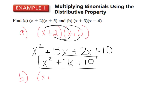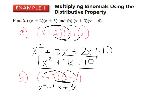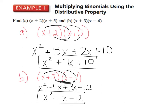Part B: x plus 3 times x minus 4. First distribute the x — x times x is x squared, x times negative 4 is negative 4x. Then distribute the 3 — 3 times x is 3x, and 3 times negative 4 is negative 12. Combine like terms and get x squared minus 1x minus 12, so the answer is x squared minus x minus 12.